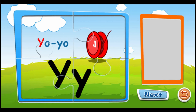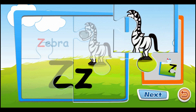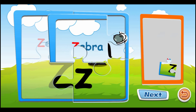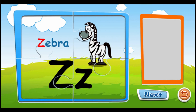Y is for yo-yo. Y, Y, Y. Z is for zebra. Z, Z, Z, Z.